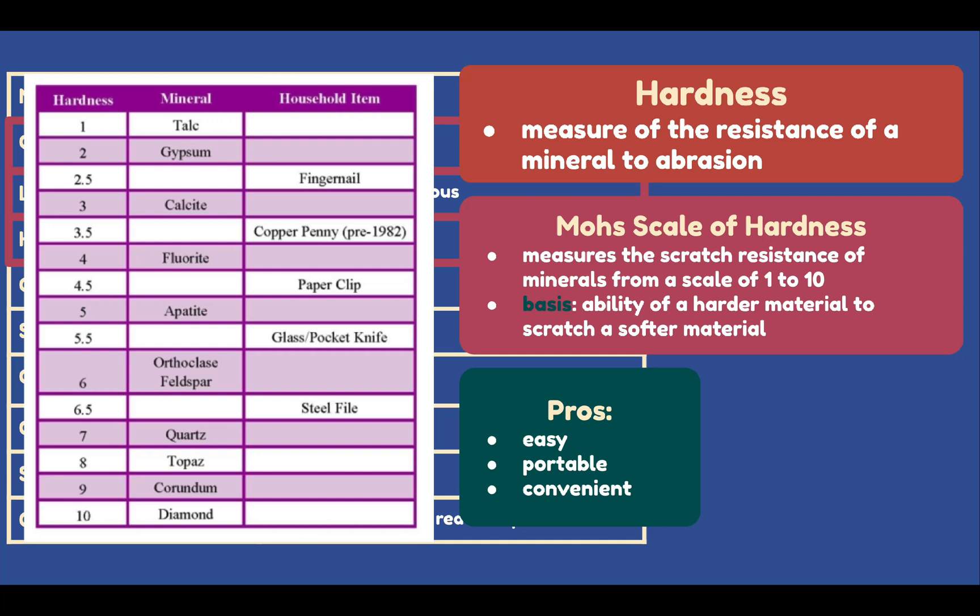The cons of the Mohs Scale: first, the scale is qualitative, not quantitative — we can't make precise numerical comparisons. And second, the test cannot be used to accurately test the hardness of industrial materials.